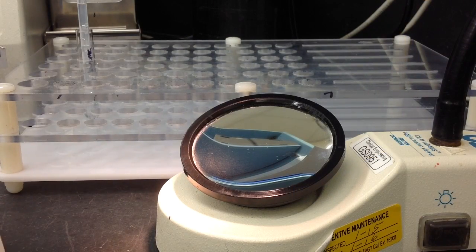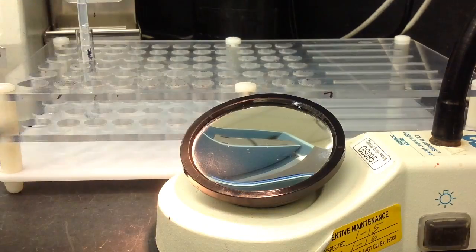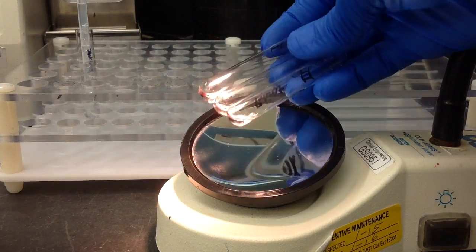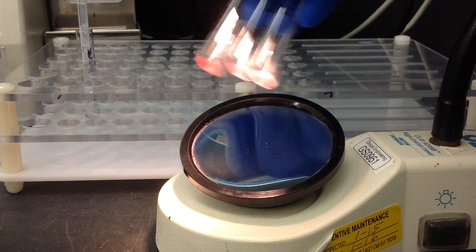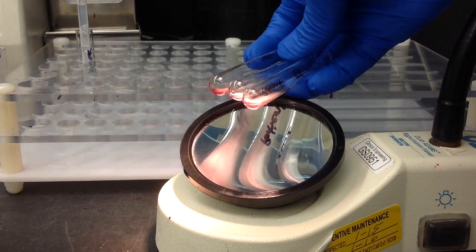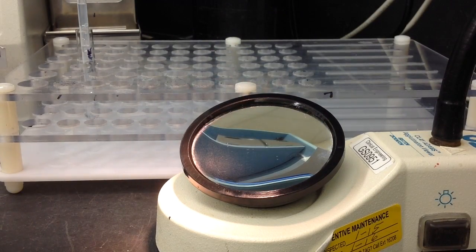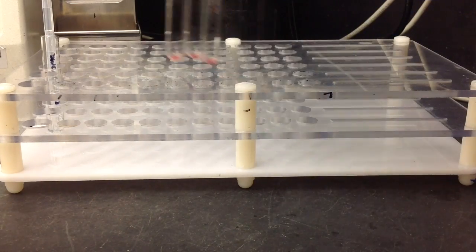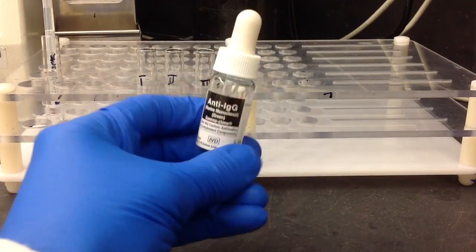...you need to centrifuge your specimens. Then you can read them at 37 degrees Celsius, which is what I'm doing now. So just resuspend your cell buttons. Once you've done that, the next stage would be to cell wash them, which I've already done...